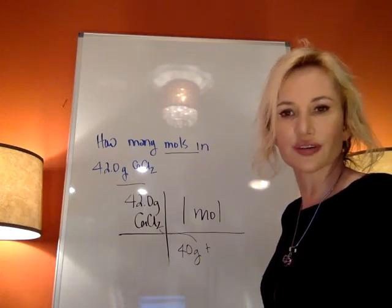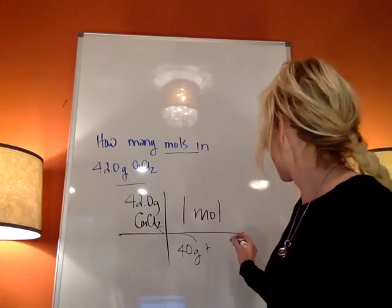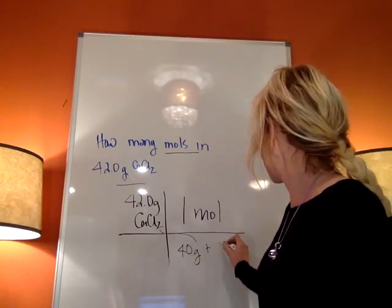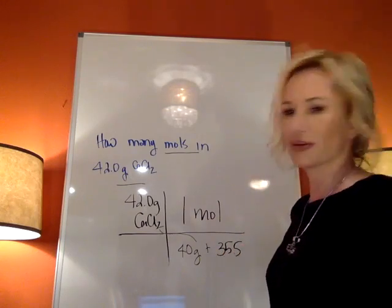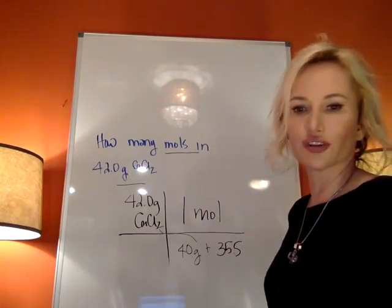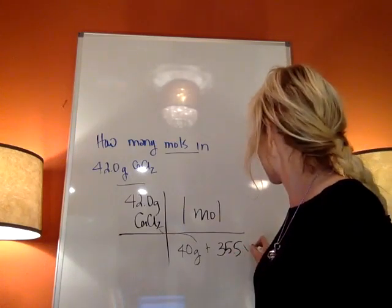Typically you don't go to more than four when you're doing this. You will find that it's about 35.5 for each chloride. I have two chlorides, so I have to add this twice or take it times two.